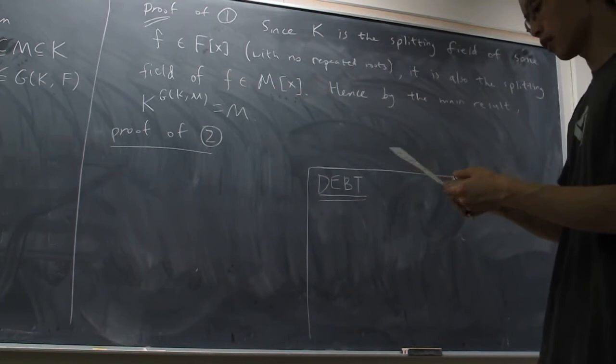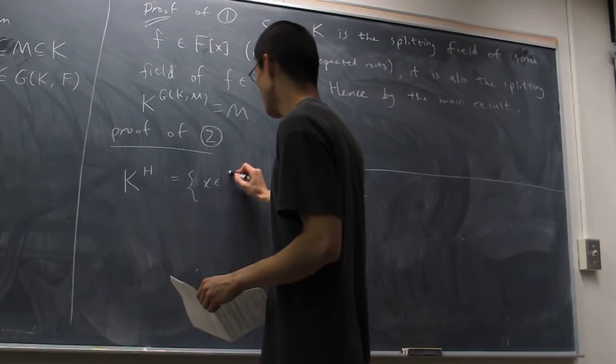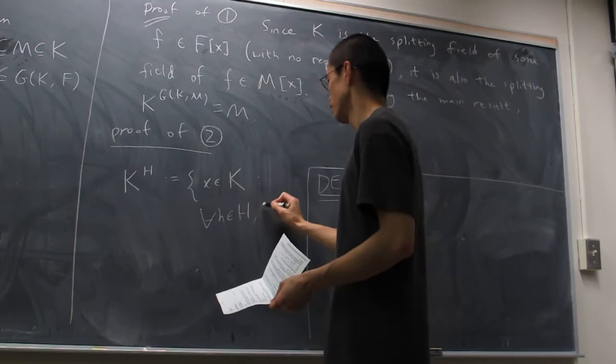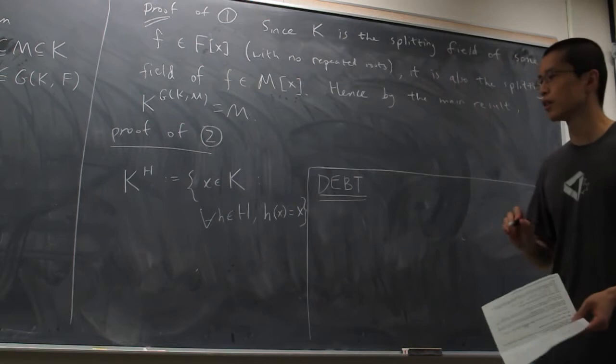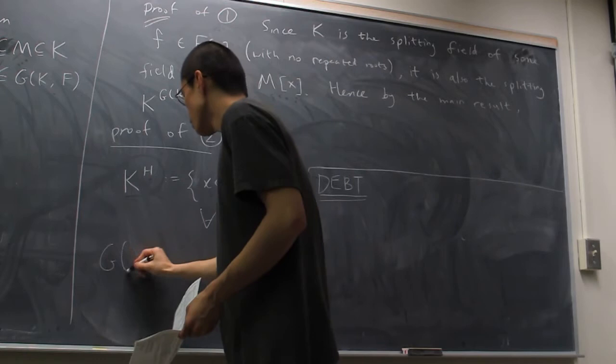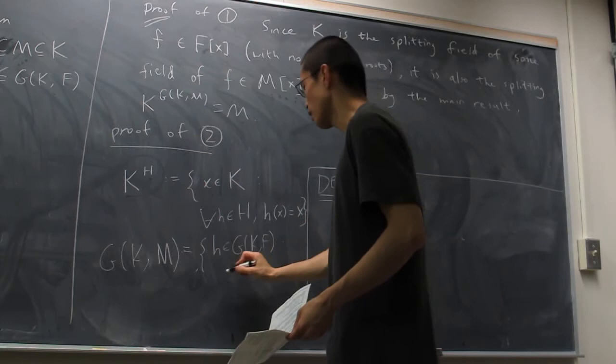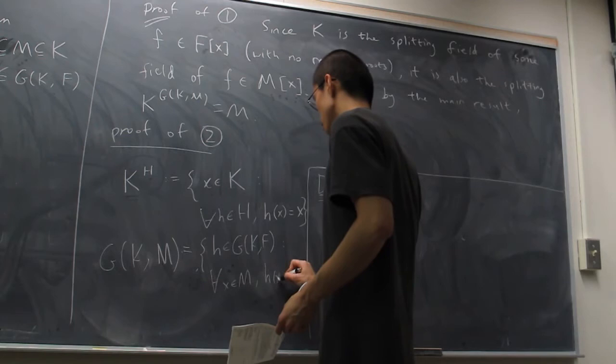Before we go on, let me remind you what this notation is. K^H is the set of all elements x in K that are fixed by all h in H. H is a subset of the automorphism group on K that fixes F, and K^H is the fixed field of H. The inverse operation, G(K/M), is the set of automorphisms that fix all elements of M.